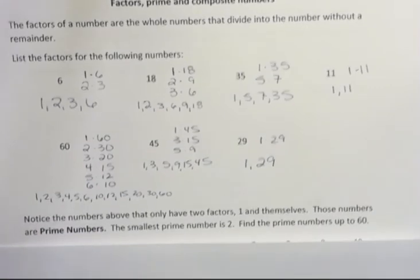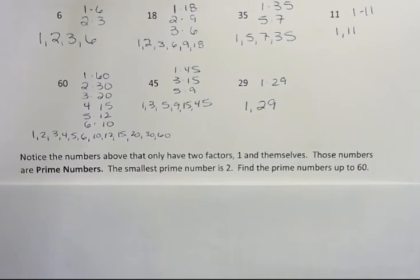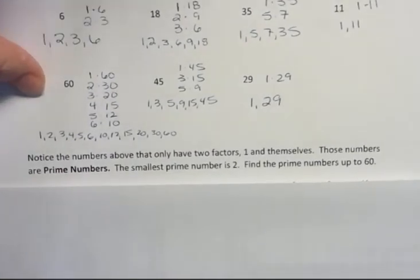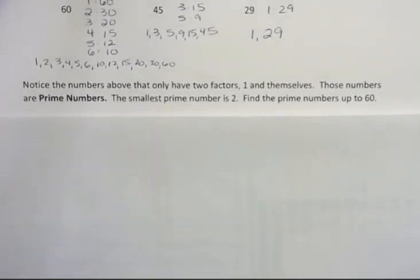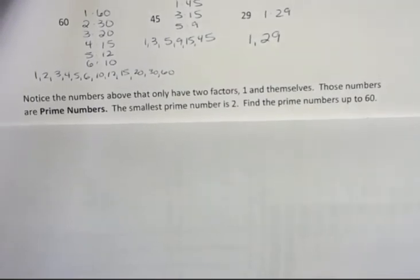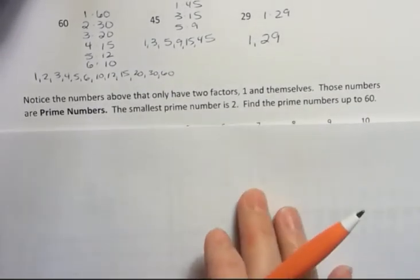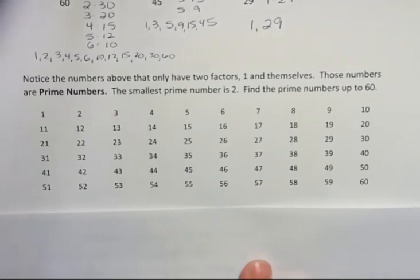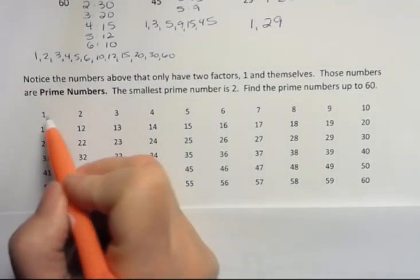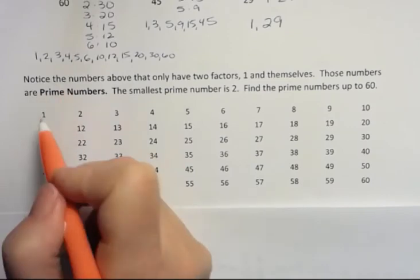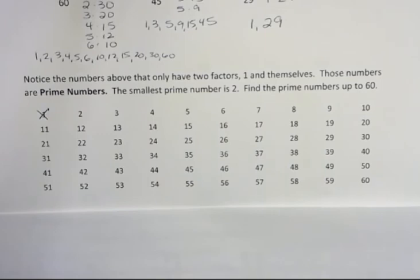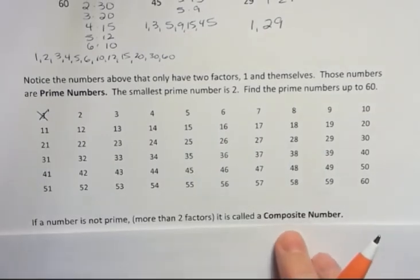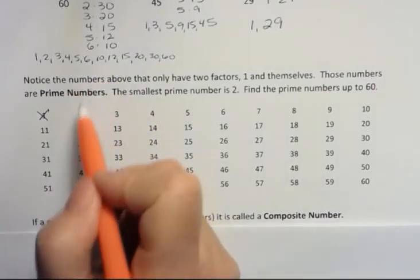Notice the numbers above that have only two factors, 1 and themselves. Those numbers are prime numbers. 11 and 29 are what we call prime numbers. They have just two factors. The smallest prime number is 2. And then I want you to find the prime numbers up to 60. And I'm going to show you a very nice method that was discovered back in like, I don't know, 250 BC or something by Eratosthenes. And that is the sieve method. List all the numbers that you want to go find all the prime numbers for. 1 is not a prime number. It doesn't have two factors. It's neither prime or composite.